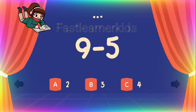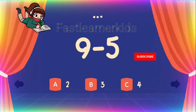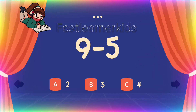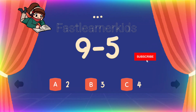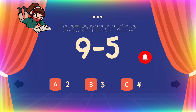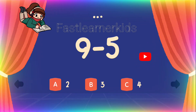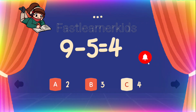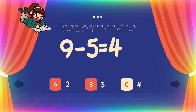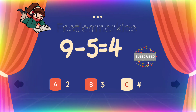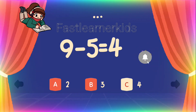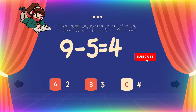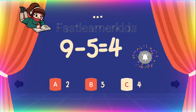9 minus 6 is equals — a? Number 2. B? Number 3. C? Number 4. When you take away 6 out of 9, the answer is c: number 3. You already have the answer on the screen. Take away 6 from 9, you get 3. 3 is the correct answer.